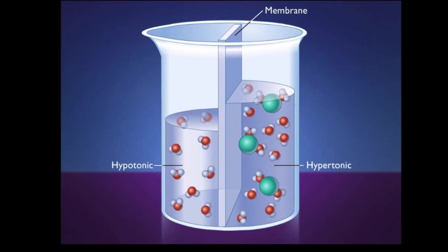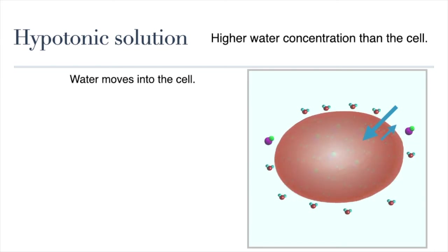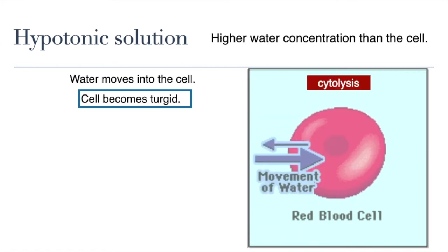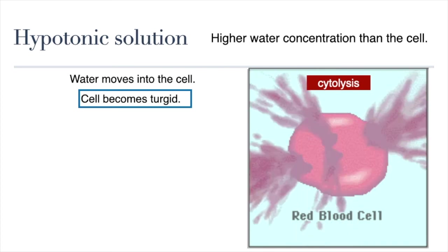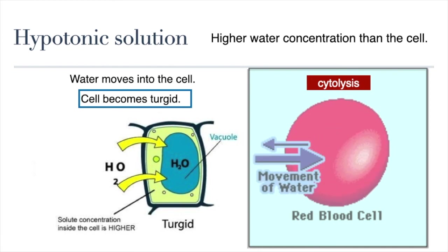Let's explore this further and see how different solutions can affect living cells. If we place a cell in an environment with a hypotonic solution — that is, one in which there is a greater water concentration than the cell, for example a cup of pure water or one with very little solute — then water will move into the cell. The cell, in this case a red blood cell, will fill with water and become turgid. When a cell without a cell wall, such as a red blood cell, is placed in a hypotonic solution and fills with water, it can fill with so much water that it can even burst, a phenomenon called cytolysis. Plant cells, on the other hand, do not burst. While they do become turgid when filled with water, their cell walls prevent them from bursting.